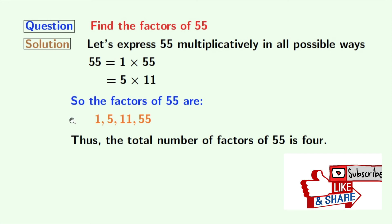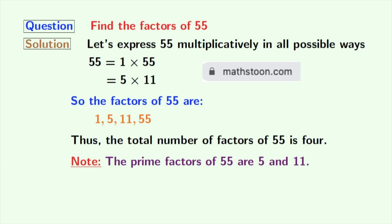Now if we look at these factors, we can see that among these numbers, 5 and 11 are prime numbers because these two numbers do not have any divisor other than 1 and that number itself. So we can say that the prime factors of 55 are 5 and 11.